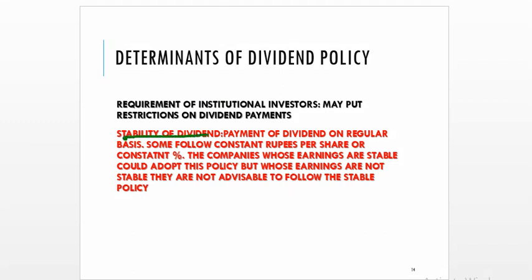The dividend policy is also influenced by the stability of dividend. Stability of dividend policy means payment of dividend on a regular basis. Some companies follow a constant rupees-per-share approach, some follow a constant payout ratio, and some pay a constant dividend plus an extra dividend when they earn huge profits. Companies whose earnings are stable and growing at a steady rate can adopt this policy, but organizations whose earnings are not stable are not advised to follow a stable dividend policy.